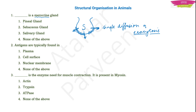The options are: pineal gland, which is actually an endocrine gland found in the brain — so it is not the answer. Sebaceous gland is an exocrine gland, so it is also not the answer. Salivary gland is actually a merocrine gland. It secretes saliva, and this saliva is released from the gland without damaging any of its cells. So the answer is salivary gland.